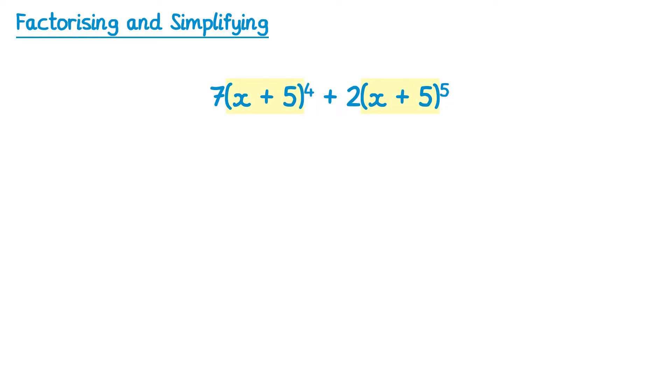The first of those has it 4 times because it's to the power 4, and the second one 5 times because it's to the power 5. Since it appears 4 times in the first one and 5 times in the second one, we can factorise it out a maximum of 4 times.